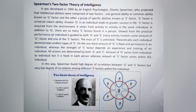The amount of G varies from individual to individual but is fixed in each person, whereas the amount of S-Factor varies within the individual. Spearman found a high degree of correlation between G and S factors, but a very low degree of correlation among different S factors within the individual.